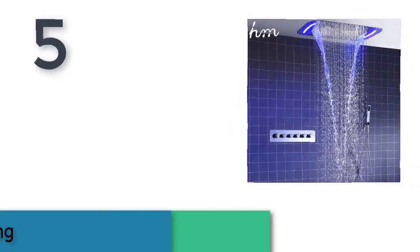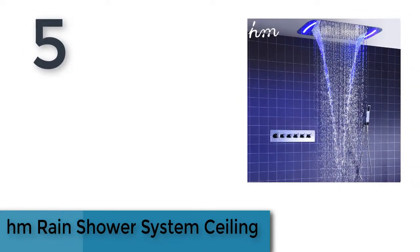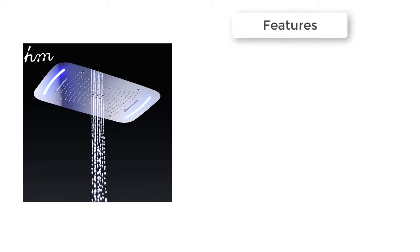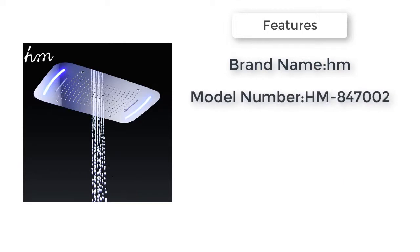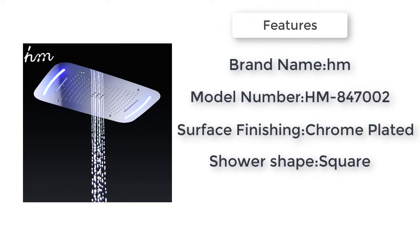Five best shower systems. Item number five is the rain shower system ceiling. Brand name model number HM 847002. Material brass, surface finishing chrome plated, shower shape square, height adjustable yes, thermostatic shower set. Function one: rainfall shower unit type piece.